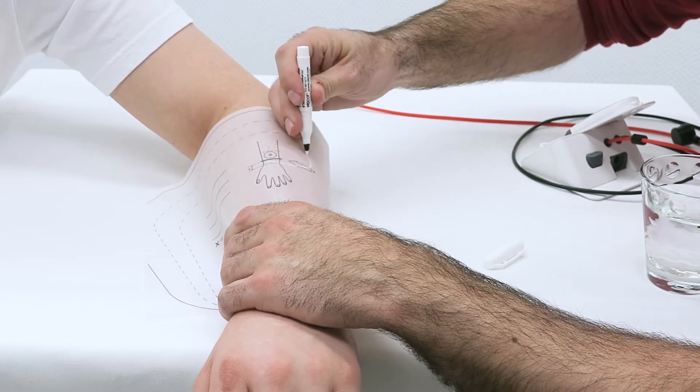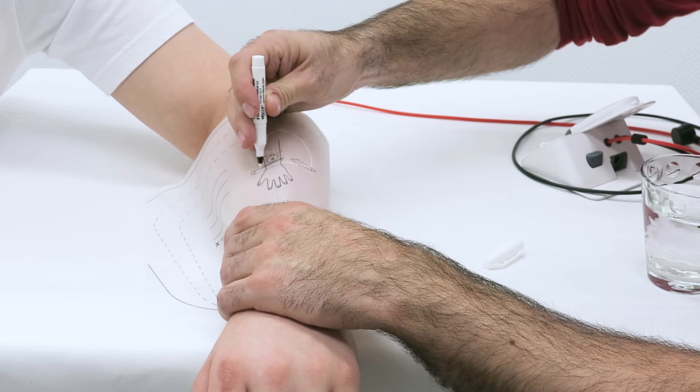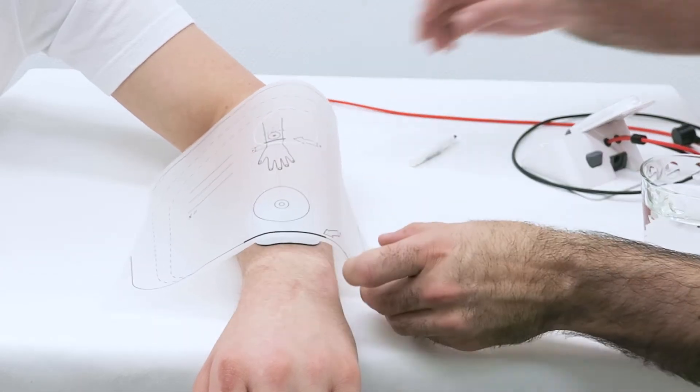Then, find the marker outlines on the user's forearm and duplicate them onto the transfer sheet.